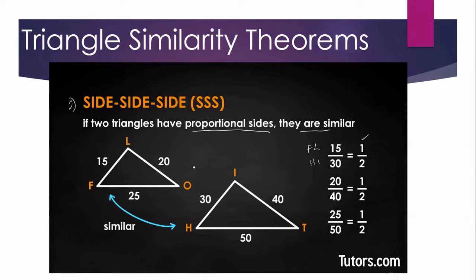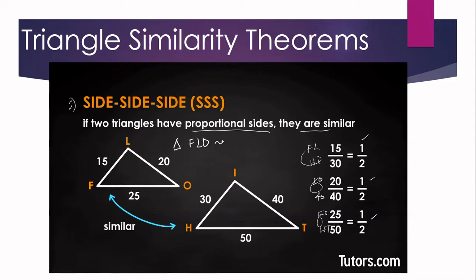Another pair of corresponding sides: LO is 20 and IT is 40, giving a ratio of 1 over 2. And FO is 25 while HT is 50, again a ratio of 1 over 2. Since the ratios of all corresponding sides are equal, by SSS similarity theorem, triangle FLO is similar to triangle HIT.